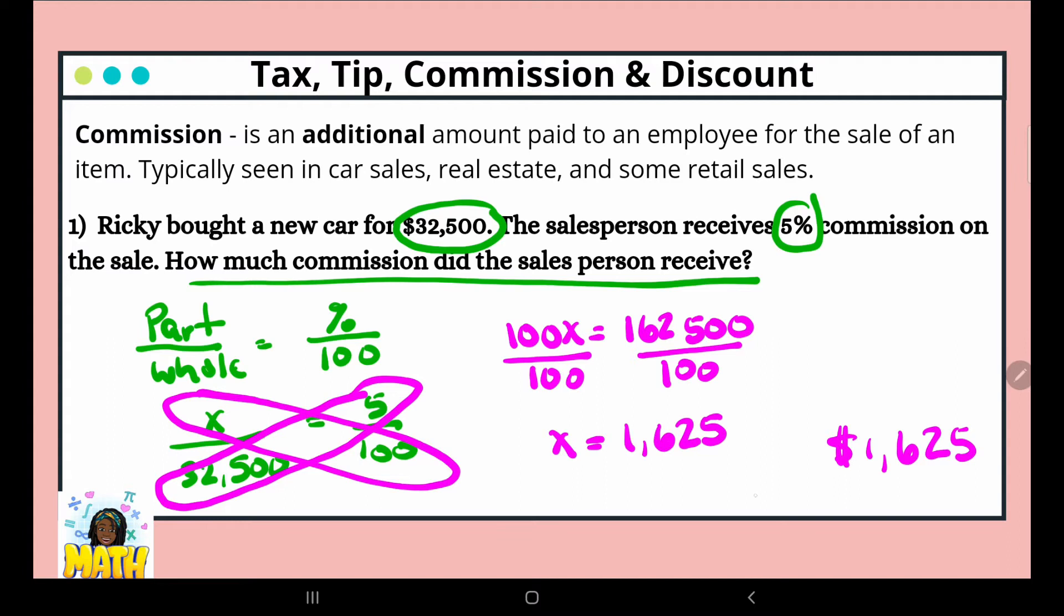The simplest way to have done that would be to either divide or cancel out those zeros, because it's like dividing by 100. What's left is $1,625, which is our total commission.